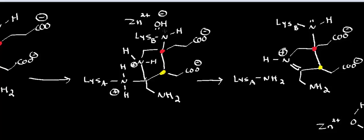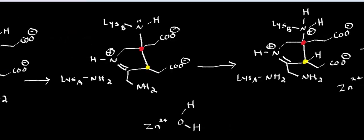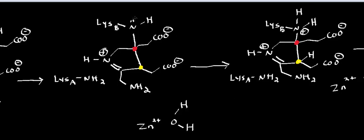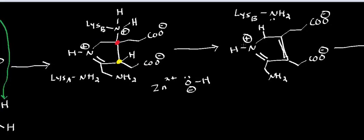The hydroxide here now does a proton transfer, abstracting a proton. That breaks a bond and forms a double bond, expelling lysine A as the leaving group. Now we have a double bond forming in what will become the pyrrole ring. Then lysine B does a proton transfer with water, generating a hydroxide chelated to the zinc and leaving lysine B in the protonated state. The hydroxide then abstracts another proton from the nascent pyrrole ring, causing a double bond to form there and expelling lysine B as the leaving group.